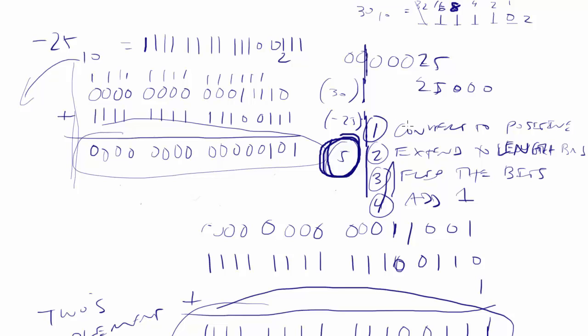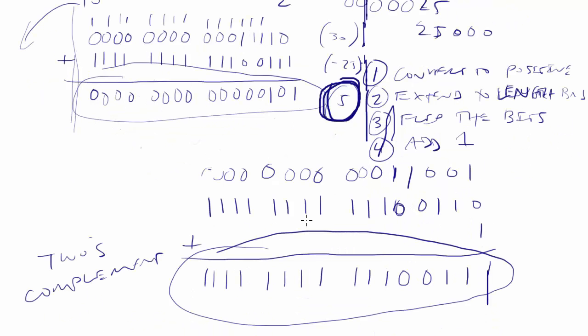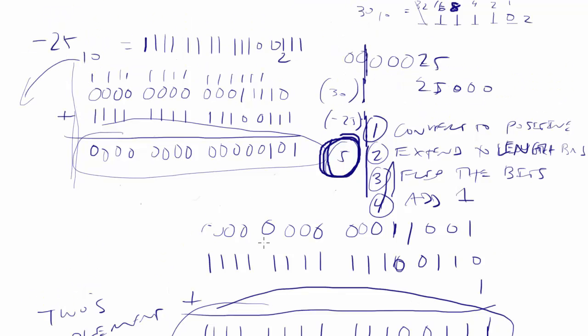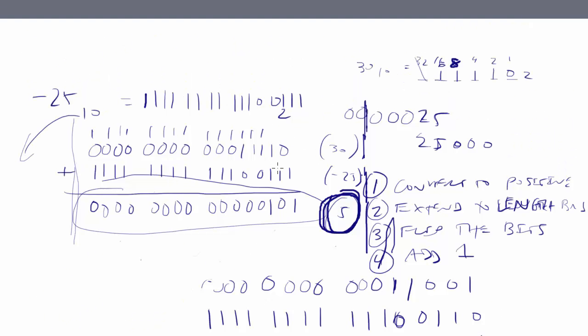So the steps for 2's complement are: convert to the positive number — so convert negative 25 to a positive — then extend that number out to the length of the bus. As you're doing a problem, assume it's 32 bits unless otherwise noted, but I kept it to 16 bits here. Then add 1. And I got this number, which is the negative 25 stored in 2's complement. It's stored in a way that if I add it together, I'll get the correct result.